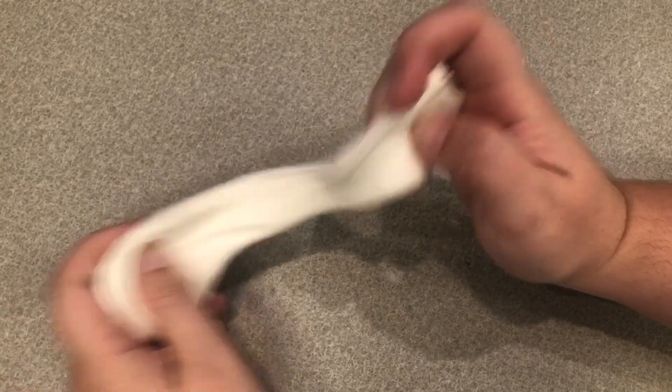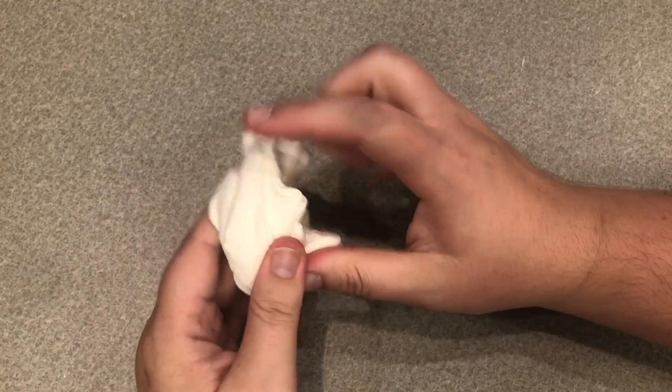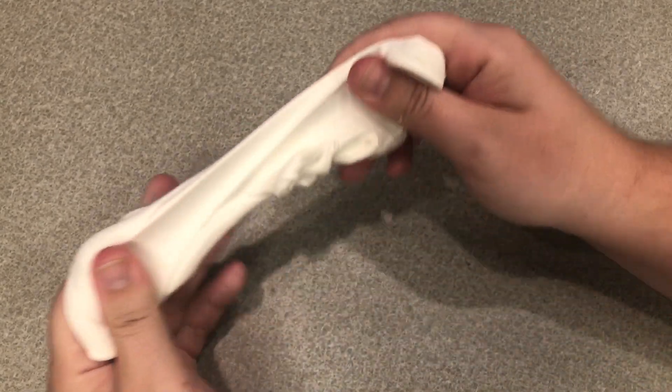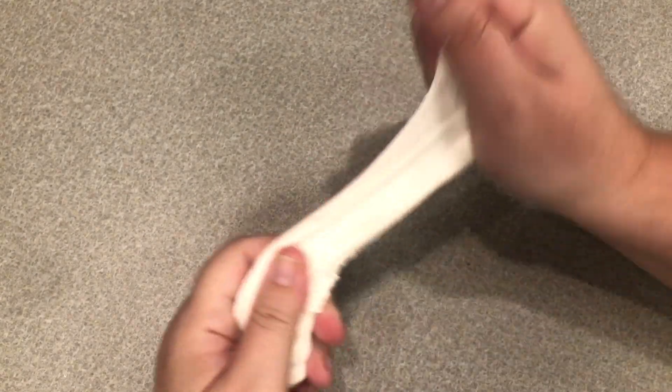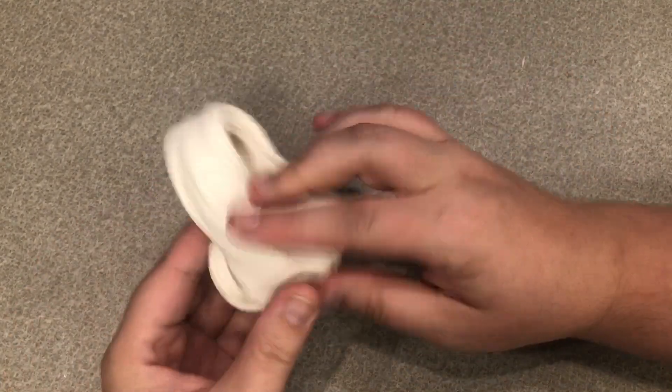So to make our little Dratini first we just need to open up the package and then just work the model magic a little bit so that it gets nice and stretchy and just ready to be used.